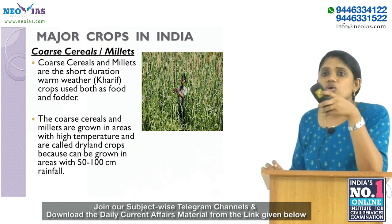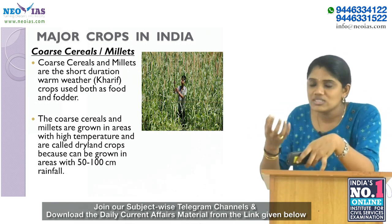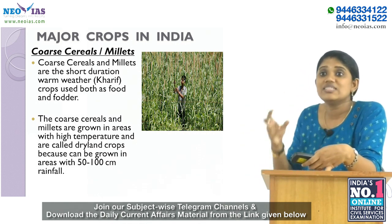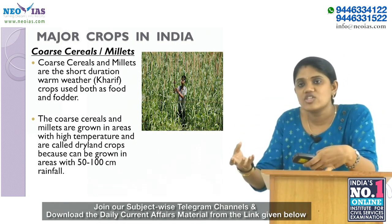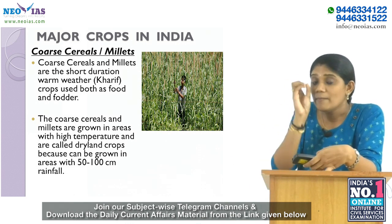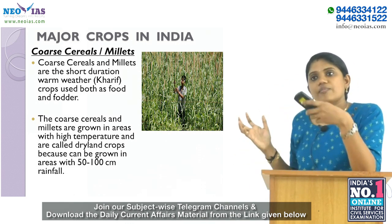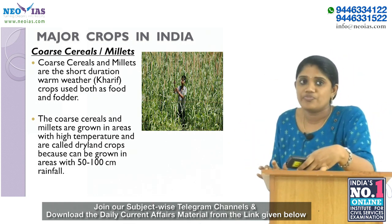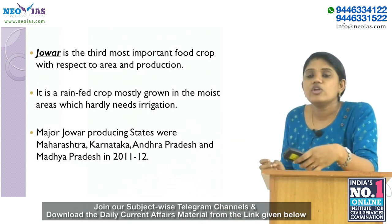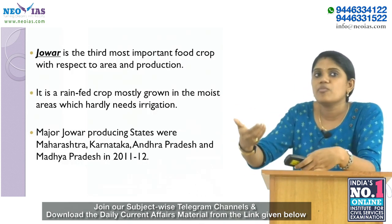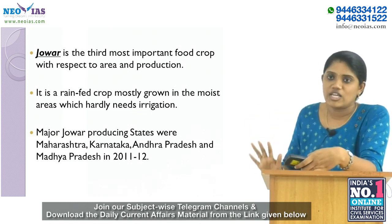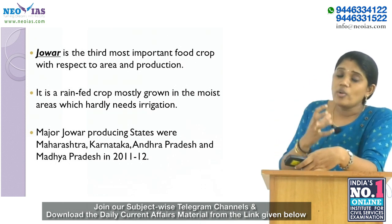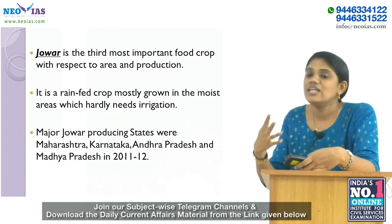Though known as coarse grains, they have high nutritional value. For example, ragi is very rich in iron, calcium, and micronutrients. Jowar is the third most important food crop with respect to area and production, and it is a rain-fed crop grown in moist areas that hardly needs irrigation. Major jowar-producing states include Maharashtra, Karnataka, Andhra Pradesh, and Madhya Pradesh.